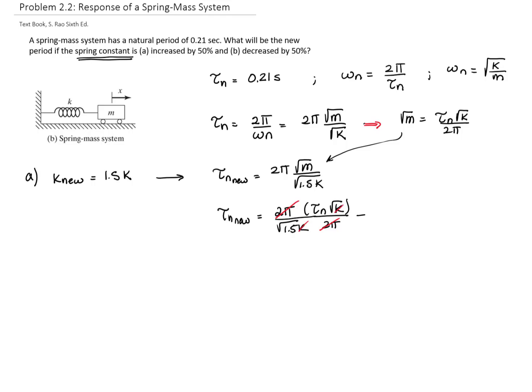So my new period will be the original period divided by the square root of 1.5. So if the original period is 0.21 seconds divided by the square root of 1.5, I get that the new period is equal to 0.1715 seconds.